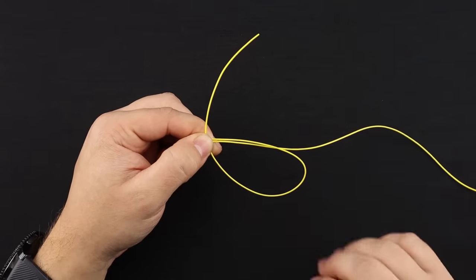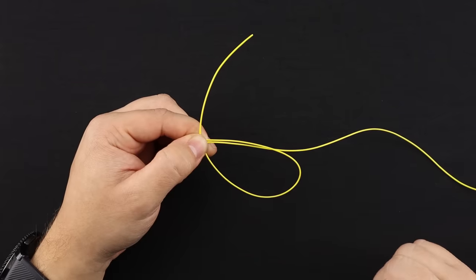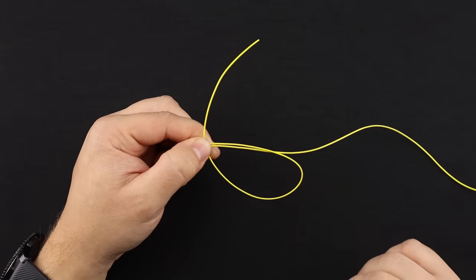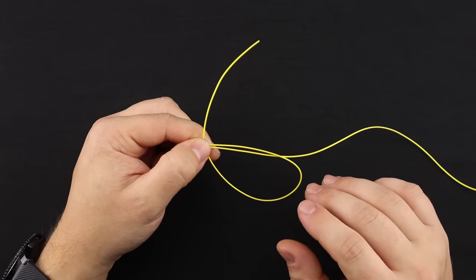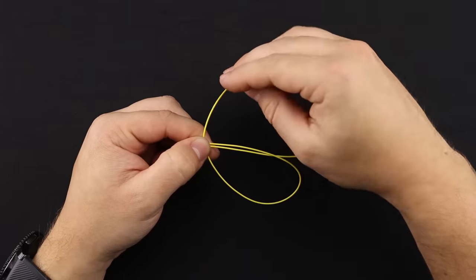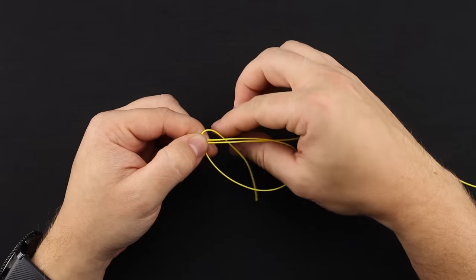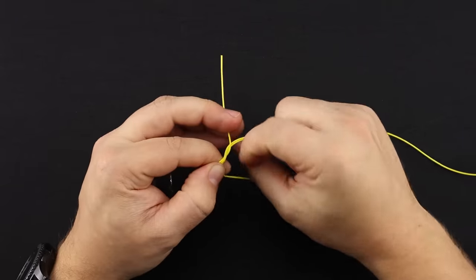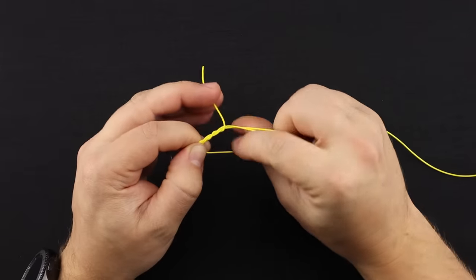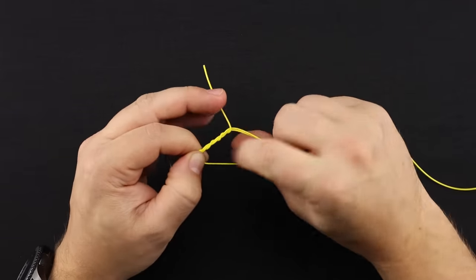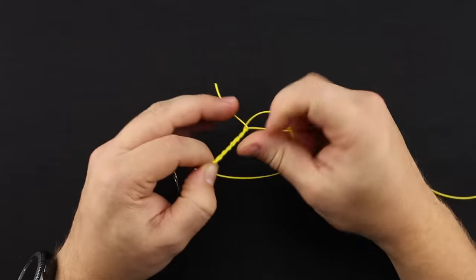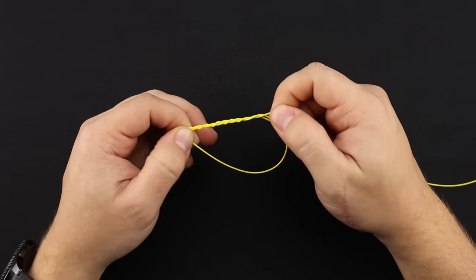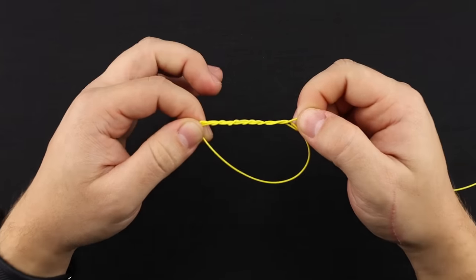With the heavier line, you're going to do about 4 to 6 wraps and with a lighter line 6 to 10 wraps. With this line, I'm going to do about 5 wraps. So with the tag end, come through the loop here and around the two lines for 1 and 2, 3, 4, and 5, so what you should have is something that looks like this.